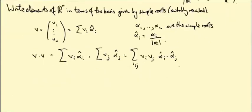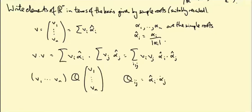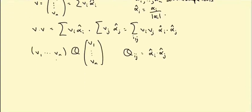Now I can rewrite this as a matrix product. It's the vector, row vector V1 up to VN times some matrix Q times the column vector V1 down to VN, where Q is the matrix whose IJth entry is alpha hat I dot alpha hat J. Just expanding this out in index notation gives this formula. Okay. Well, let's think a bit more about this matrix Q.